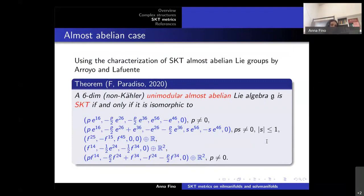In dimension 2n an almost abelian Lie algebra is a semi-direct product ℝ ⋉ ℝ^{2n-1}, and everything is determined by the action of ℝ on the abelian ideal. We show with Fabio that in dimension six, for non-Kähler unimodular almost abelian Lie algebras, there are families depending on parameters with two irreducible and several decomposable ones. In particular five algebras appear: two irreducible, and three decomposable with splittings such as 5+1 or 4+2.